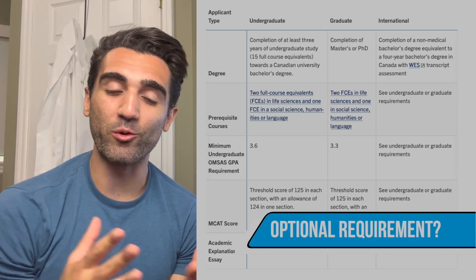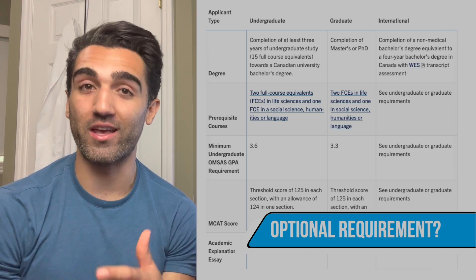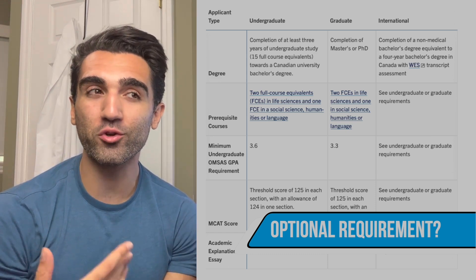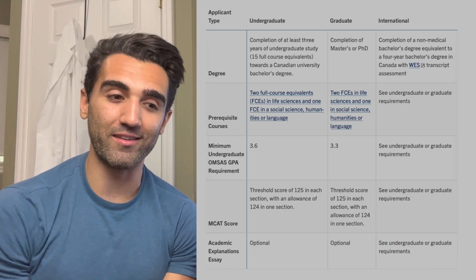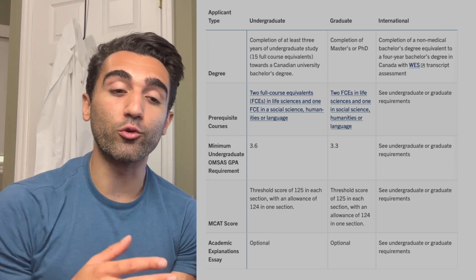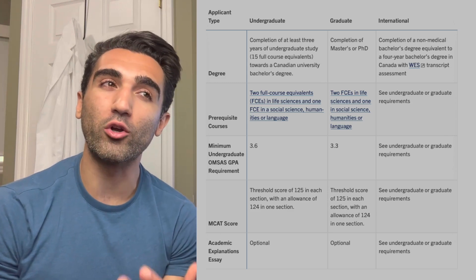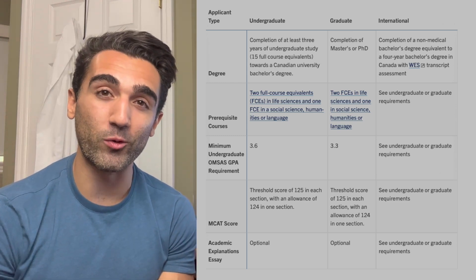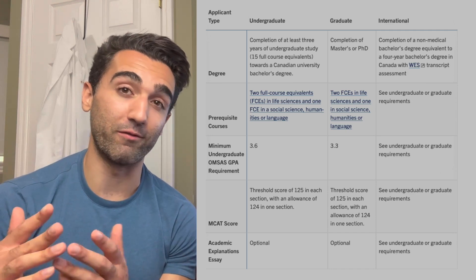The last thing to know for academic requirements is that there is a space for an academic explanation essay. This is an optional essay you can submit if there were extenuating circumstances or something outside your control that affected your grades in one semester or overall — circumstances that weren't a good representation of your academic potential. Read more about that on their website.